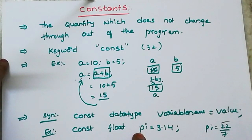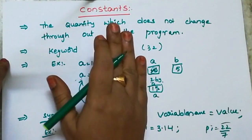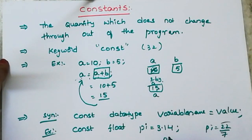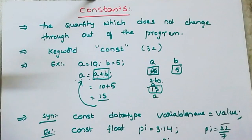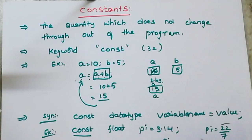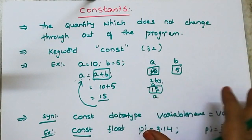When we declare a constant, we declare it and assign its value at the same time — in one step. Because pi is a constant, we declare it once and assign the value once. The constant is fixed. For float, 4 bytes of memory are allocated, and the value stored in those 4 bytes is 3.14. Once the 'const' keyword is used, that value 3.14 is fixed and cannot be changed anywhere in the program.